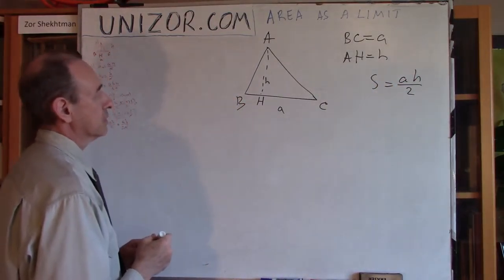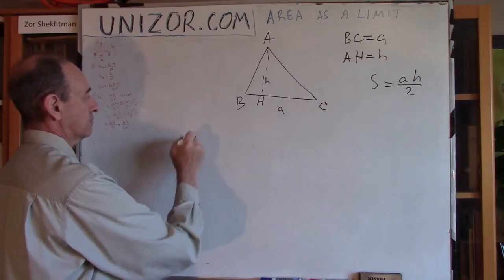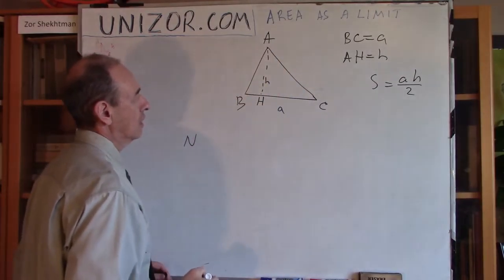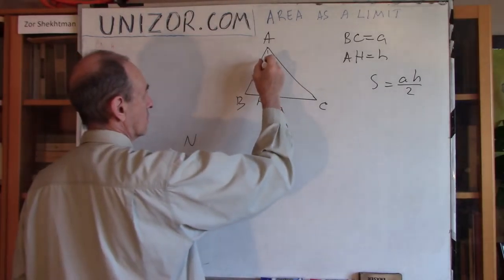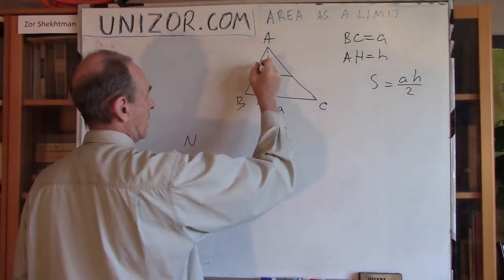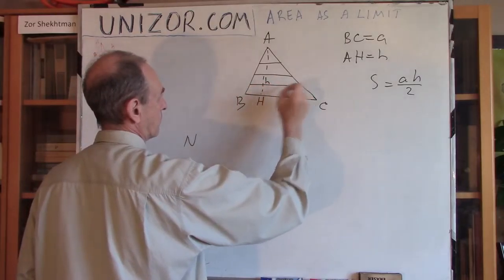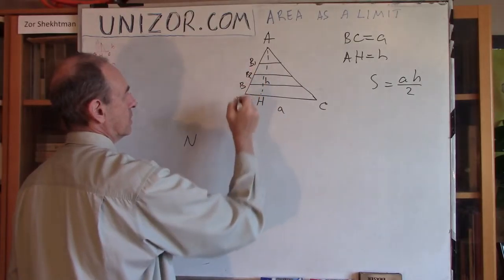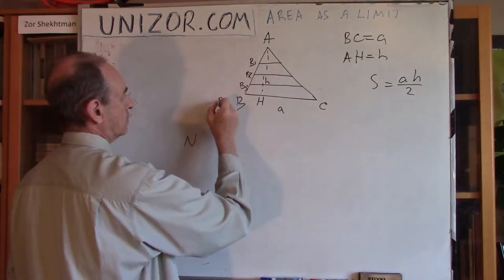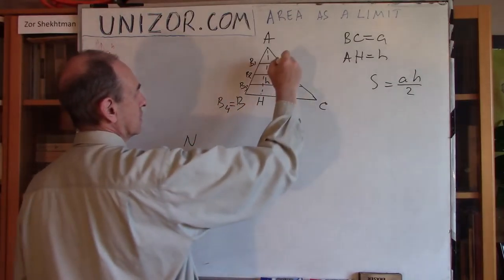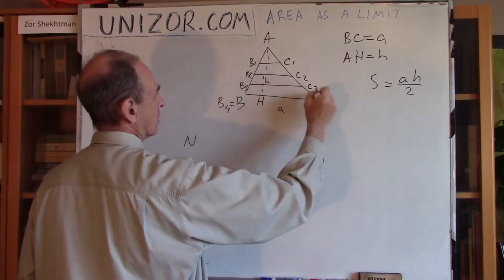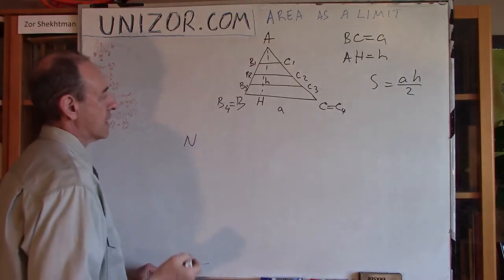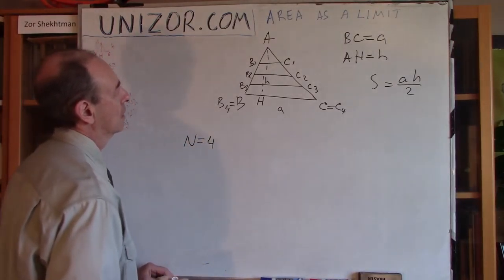Now, the way I'm going to do it is the following. I choose some number N, integer positive number, and I will divide AH into N equal parts and draw horizontal lines. So this would be my B1, B2, B3 and B4, which is equal to B. This would be C1, C2, C3, and C4, which is C. So in this case, N is equal to 4.